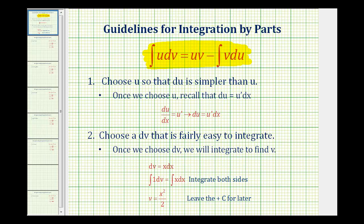So determining what to let equal u and what to let equal dv is one of the most challenging parts about integration by parts. And here are the recommendations. We want to choose u so that differential u is simpler than u. And we want to choose a dv that is fairly easy to integrate.